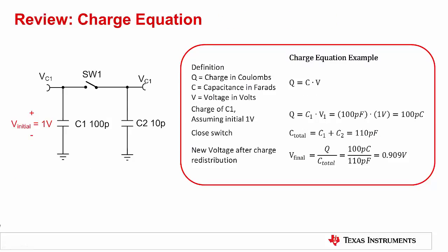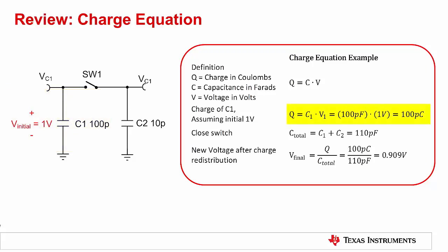The next concept we will introduce is called charge injection. Before covering it, let's review the capacitor charge equation. The charge across a capacitor is defined as the voltage across it multiplied by its capacitance: Q equals C times V. Charge, denoted by Q, is measured in Coulombs. When a charged capacitor is connected to another capacitor, the charge will redistribute across both capacitors, and the total voltage will decrease. Initially, capacitor C1 is charged to 1 volt and the switch is open — the charge is 100 picofarads times 1 volt, which equals 100 picocoulombs. When the switch is closed, the total capacitance increases to 110 picofarads as C2 is now in parallel with C1. The final voltage drops to about 0.909 volts, illustrating the redistribution of charge that underlies the charge injection concept.